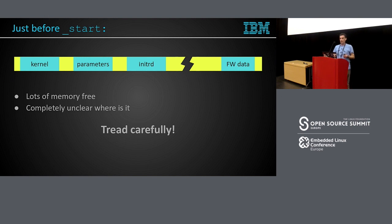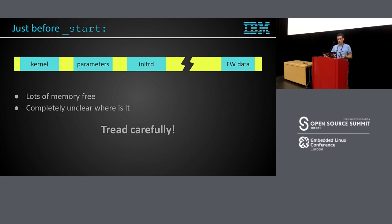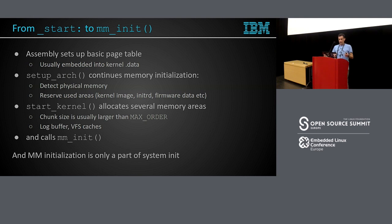The problem is that whenever some code in the kernel tries to access some physical memory, it can actually overwrite either the kernel, initrd, or some other important piece of information passed from the bootloader. So the kernel should be very careful what it does with memory before things are properly set up. There is quite a lot of code that runs from the start of the kernel to the point when the allocators are set up and functional.